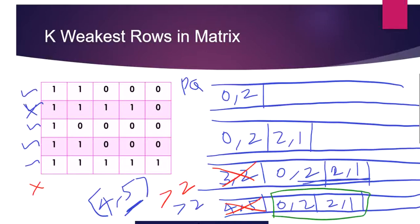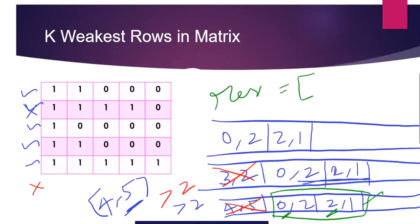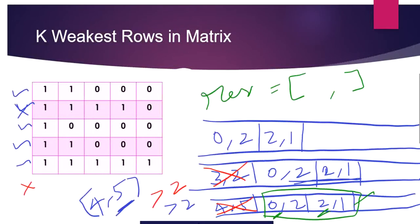Row 0 with 2 soldiers is stronger than row 2 with 1 soldier. So the weakest is row 2, then comes row 0. We declare a result array of size K. We add row 0 at the last index, then pull row 2 and add it. This gives our final result. Priority Queue helped us construct our max heap and we arrive at the result.